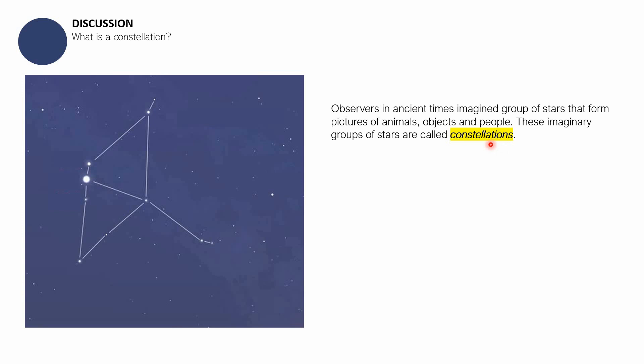When we say constellation, we refer to a group of stars. Speaking of animals, this constellation right here resembles, according to ancient people, an eagle na nakaspread widely yung kanyang wings. This is Aquila. It's named Aquila and it is resembling an animal.